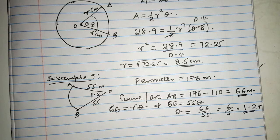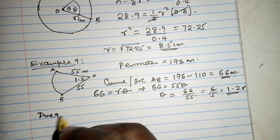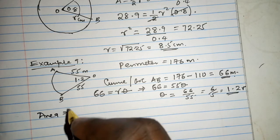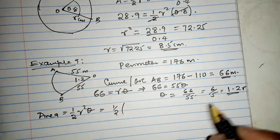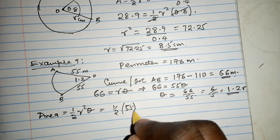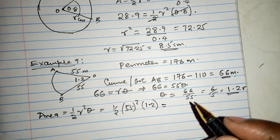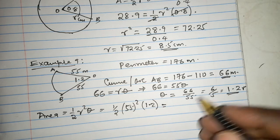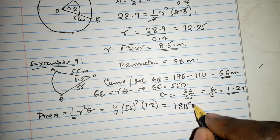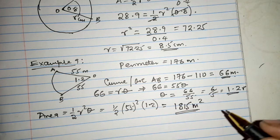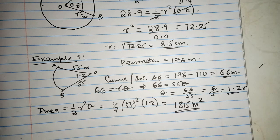So, what is the area of the plot? The question is not over yet. We need to get the area of the plot. The area is given by a half R squared theta, which is a half R is 55 squared times 1.2 radians. And this one is basically around something to do with 1,815 meters squared. Please find about that, whether this is correct. 1815 meters squared.